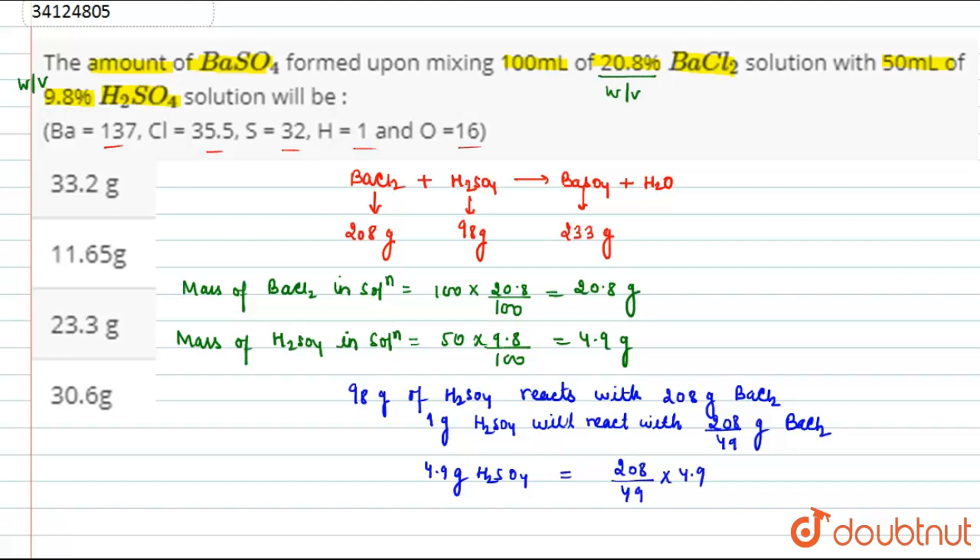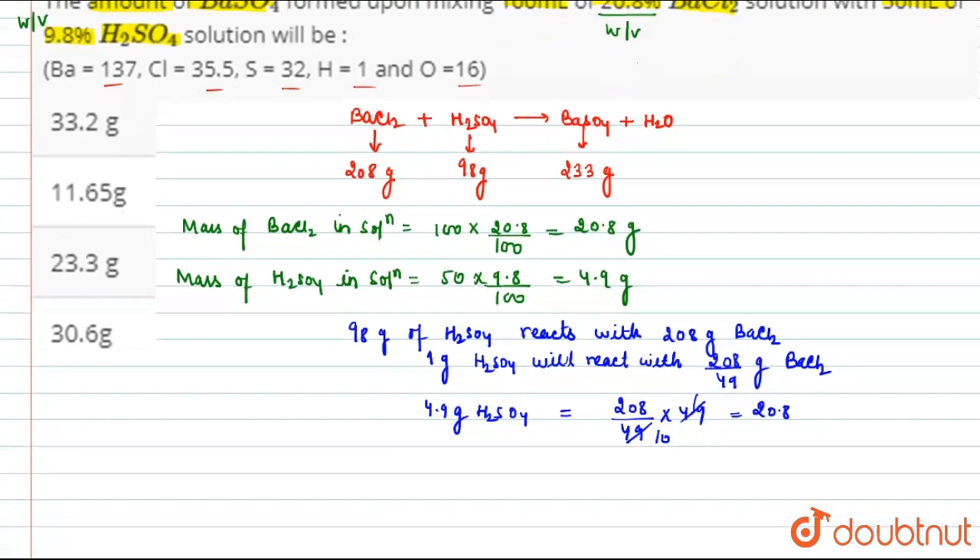So, here this will give us 20.8. So, 4.9 grams will react with exactly 20.8 grams of BaCl2.